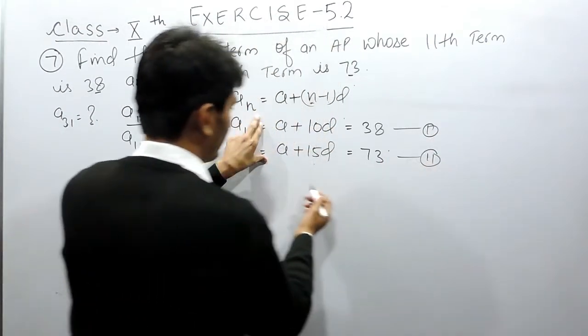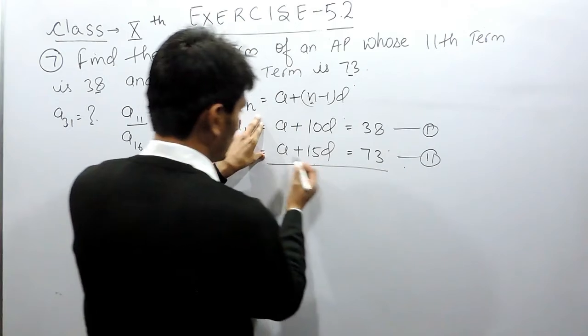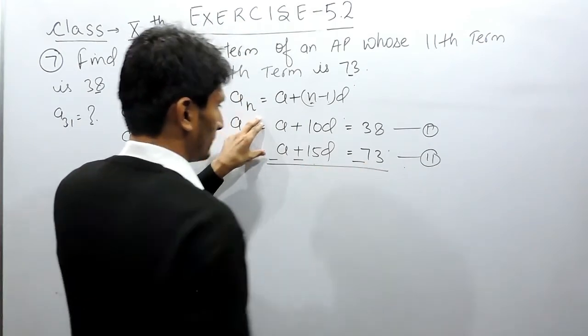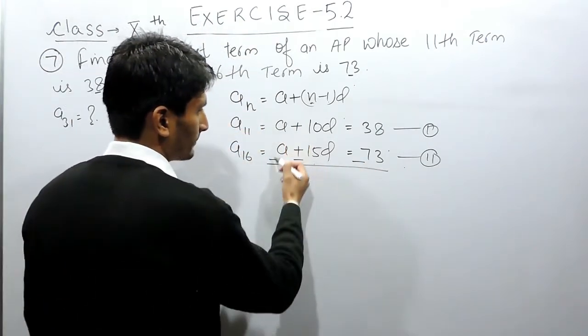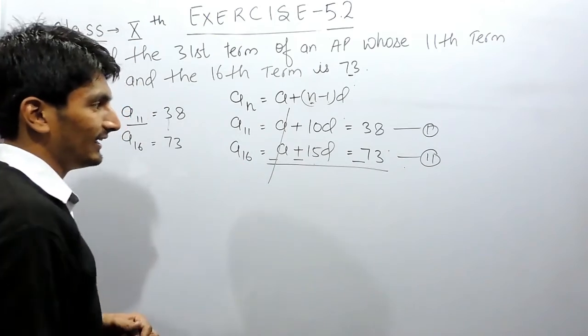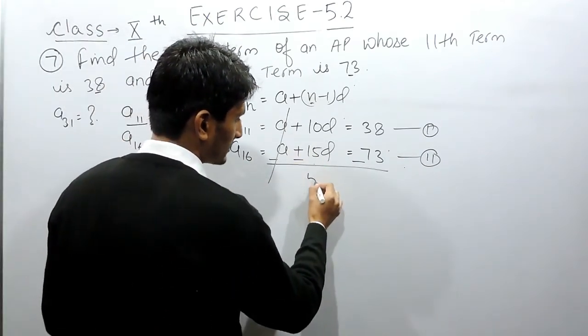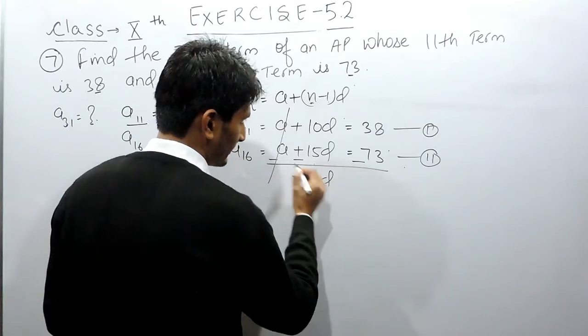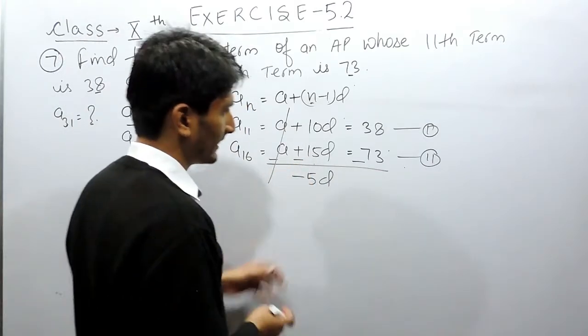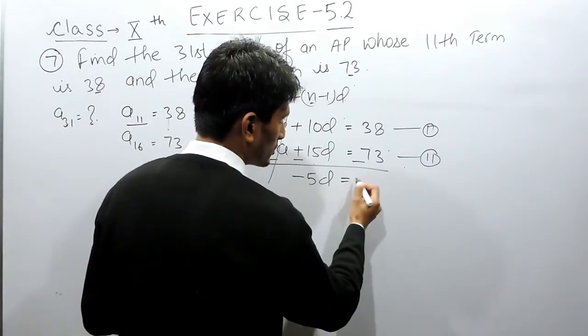So these are the two equations. If I subtract these two equations, this will become minus, this will become minus, and this will become minus, so plus minus is minus. So a and a can be cancelled out. Plus minus is minus, 15 minus 10 is 5d with negative sign because greater value has negative sign.